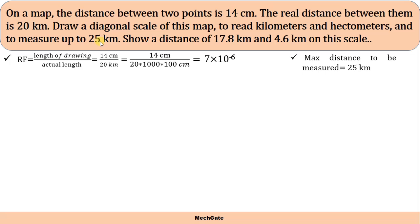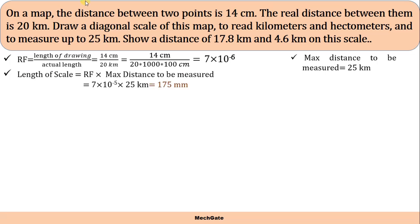First, let's find out the length of scale. Length of scale is equivalent to RF multiplied by maximum distance to be measured: 7 × 10⁻⁵ × 25 kilometers. If we simplify this, the length of scale is equivalent to 175 millimeters. Maximum distance to be measured is 25 kilometers and we have to show only two units — kilometer and hectometer.